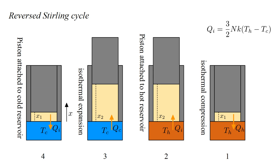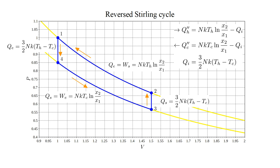Now let's look at the reverse Stirling cycle. The isothermal processes are exactly reversed, just as in the Carnot cycle. Heat Q-hot that was extracted from the hot reservoir is now replaced, and heat Q-cold that was delivered to the cold reservoir is now extracted. But again, the gas is heated by extracting heat Q-I from the hot reservoir, and cooled by delivering heat Q-I to the cold reservoir. As shown at upper right, the heat delivered to the hot reservoir in the reverse Stirling cycle — labeled Q-hot double prime — is not the same as the heat extracted in the forward cycle, what we called Q-hot prime.